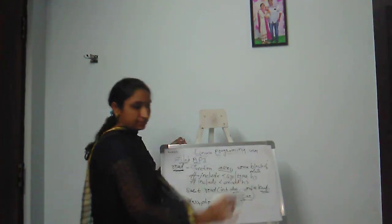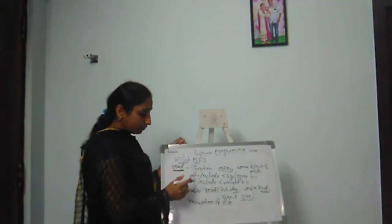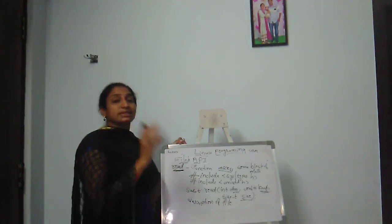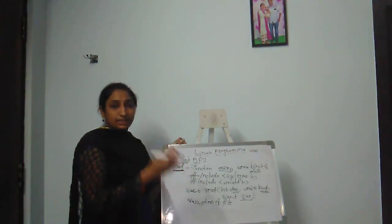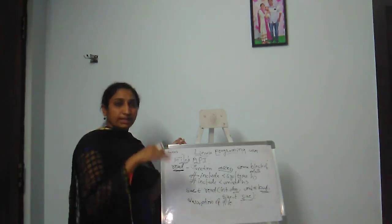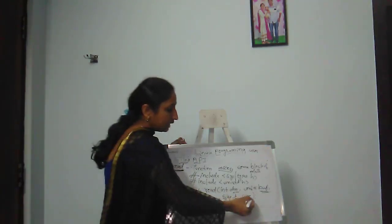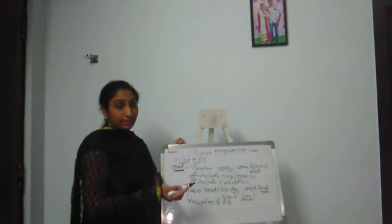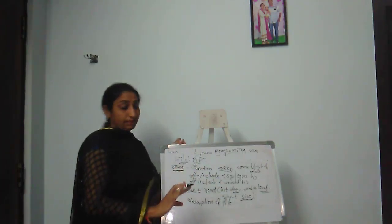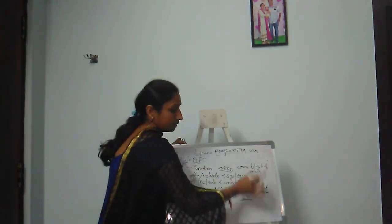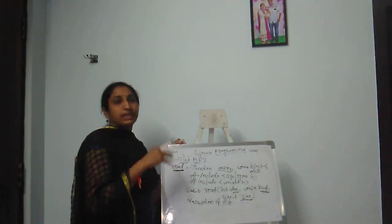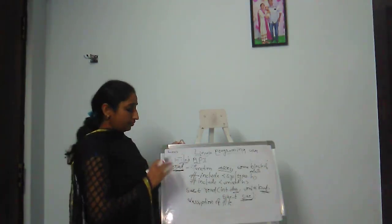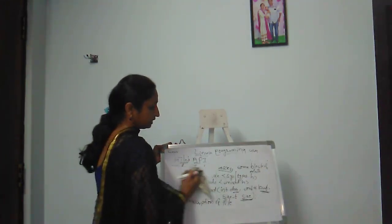The size parameter specifies how much data we are fetching from the file. These three parameters — descriptor, buffer, and size — describe where the file is, where to store the fetched data, and how much data to fetch. This completes the read system call.